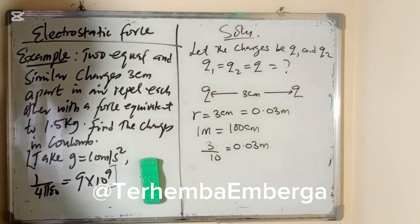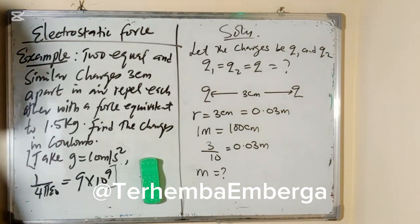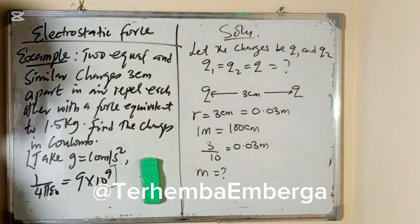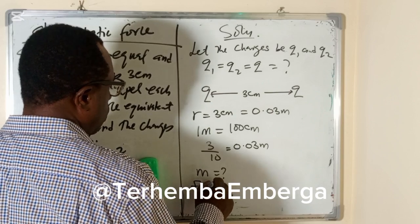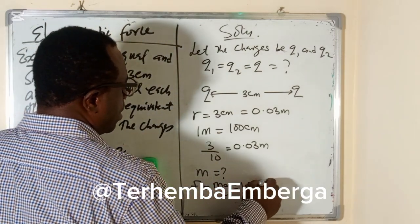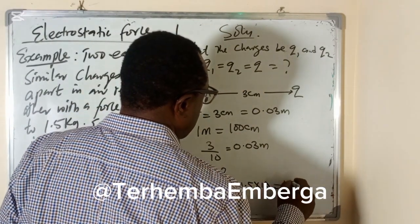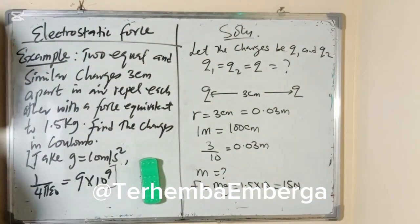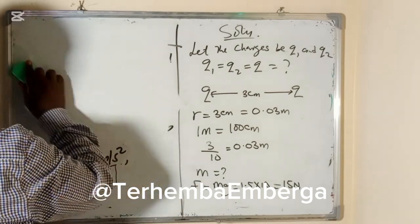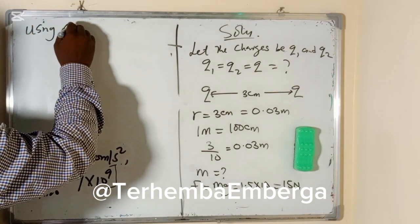What we are given here is a mass, but based on Coulomb's law formula, what we need is force. Force is equal to mg, so since the mass is given we have 1.5 times 10, and that is the reason why the 10 is given. This gives us 15 Newtons. So our force is 15 Newtons.